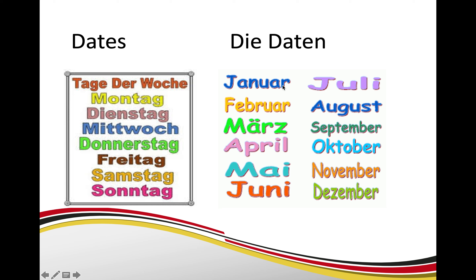Days of the month — the months: Januar, Februar, März, April, Mai, Juni, Juli, August, September, Oktober, November, Dezember.